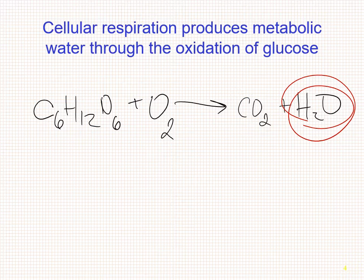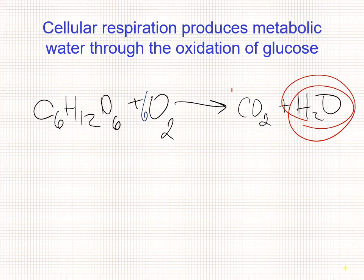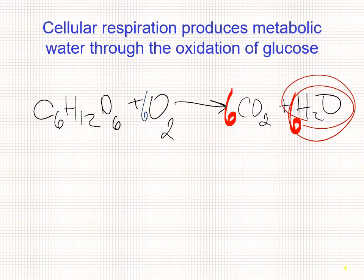You have two byproducts: carbon dioxide and water — and this water is metabolic water. For every molecule of sugar you break down, you take in six oxygens and produce six carbon dioxide molecules and six water molecules. So you're getting water out through the metabolism — the oxidation — of the glucose molecule.